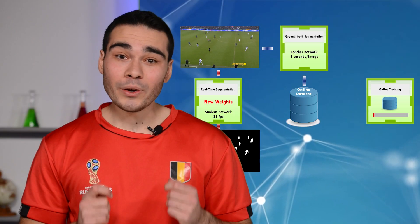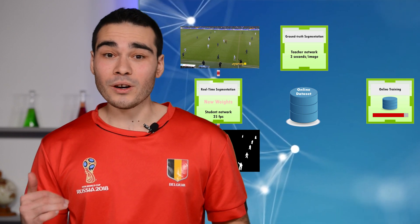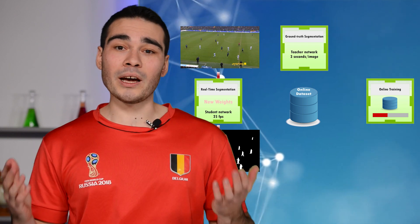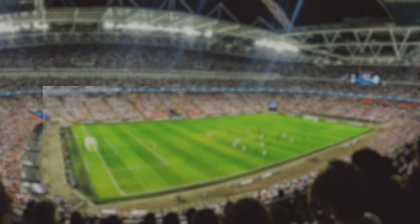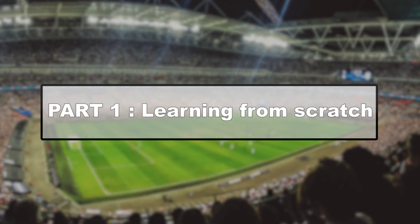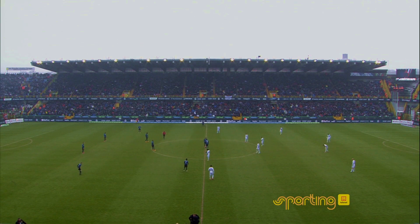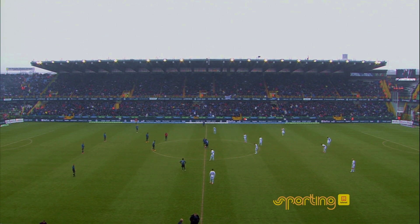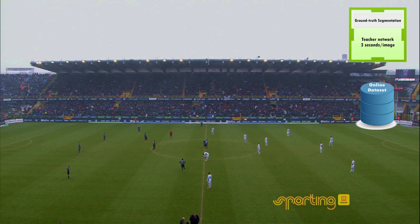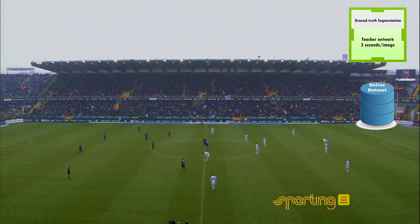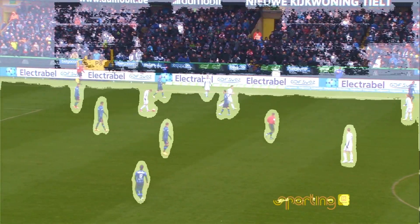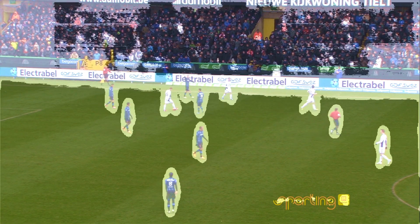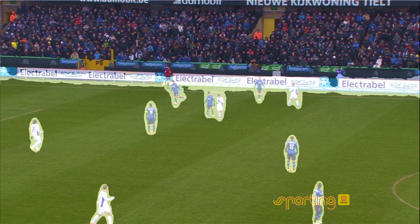This way, even if the real-time segmenting student is really bad at the beginning, it becomes better and better and is always kept up to date thanks to the online distillation. Let's illustrate the whole process with a concrete example: a video of a soccer match. We start with a student network with random weights. At first, no player is segmented — every pixel is classified as background. The teacher network builds up a dataset for training the fast student. After the first weight update, the players are detected but coarsely segmented, and unfortunately advertisements and the public are segmented as well.